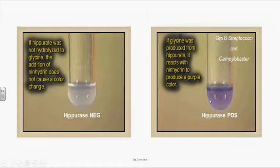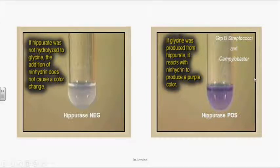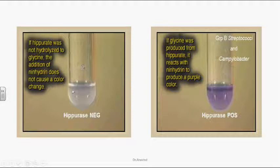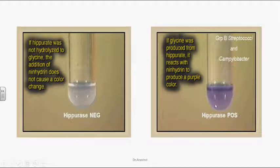If you see the color change in the hippurate test, that indicates the organism is hippurate positive. Very few organisms are hippurate positive, such as Group B Streptococcus and Campylobacter (a common cause of dysentery in humans). If there is no color change, the organisms cannot hydrolyze hippurate into benzoic acid and glycine, so glycine is not produced. Where glycine is produced, you can see a purple coloration.